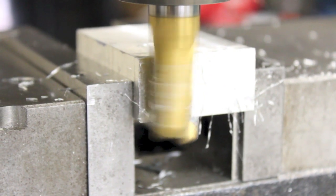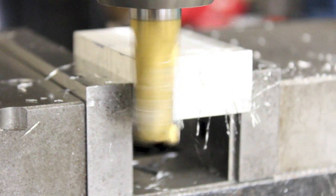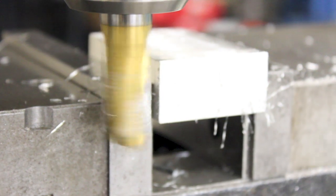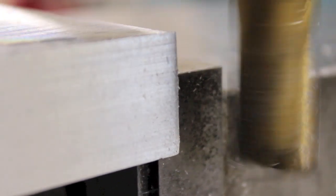The climb milling technique is not used in rough cuts because it effectively attempts to pull at the part and will jerk out all of the play out of the machine table at one time.